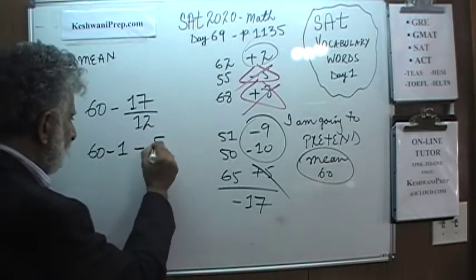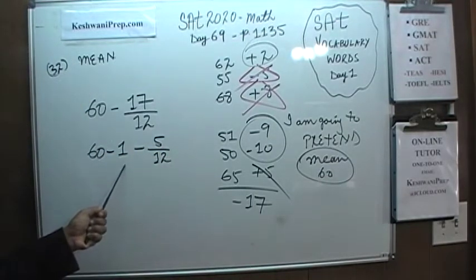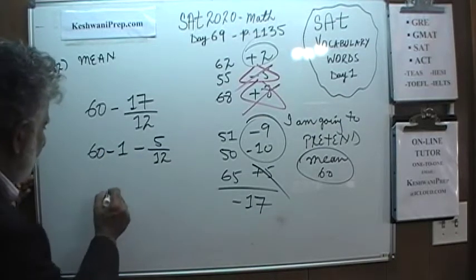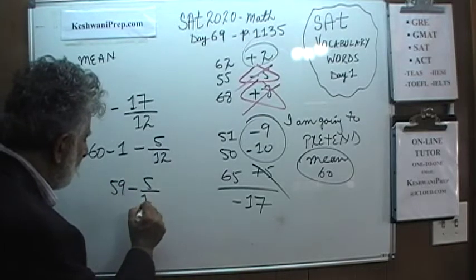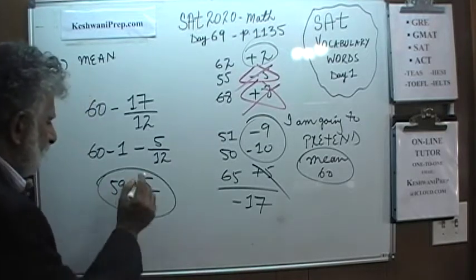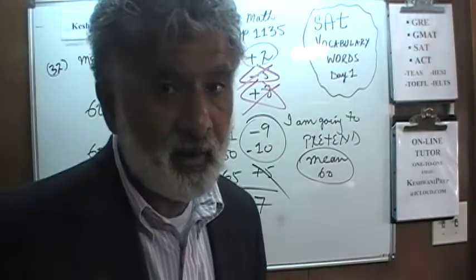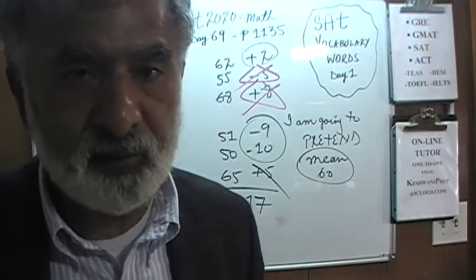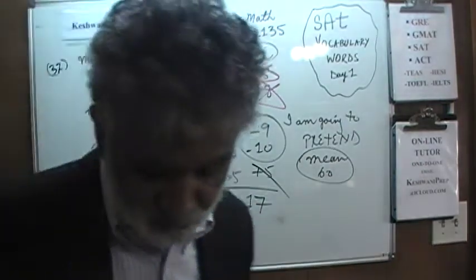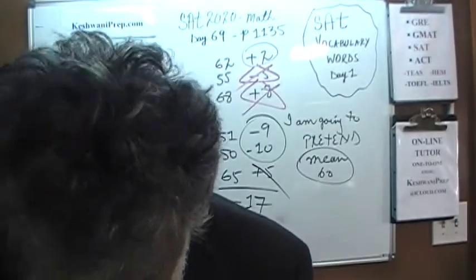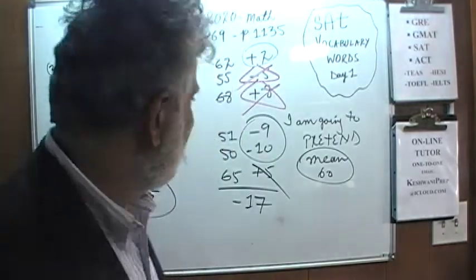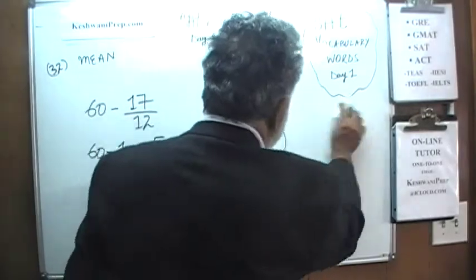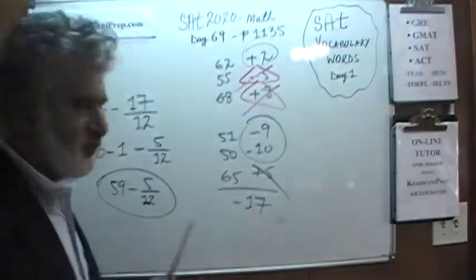60 minus 17 is, so it will be minus 1 minus 5 over 12. Because this minus 1 actually is 12 over 12. 12 over 12 and a 5 over 12 will give us 17 over 12. So all we have is this thing. And since this is a gradient problem, they are looking for something to the nearest tenth. The problem says, round your number to the nearest tenth. Which makes our life very easy.